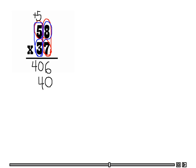I am going to scratch out this 5 because I used it for the ones place. Now I am going to carry over the 2 for the tens place. So I did 3 times 8; now I am going to do 3 times 5, which is 15, plus 2 is 17. We know that gives us a value in the thousands.